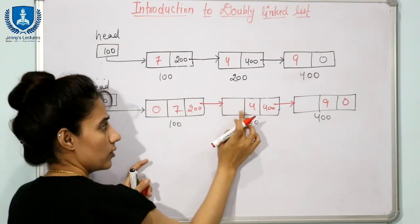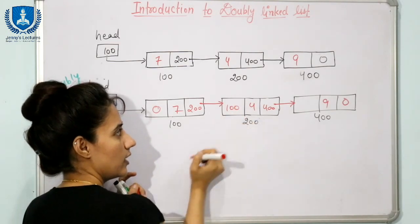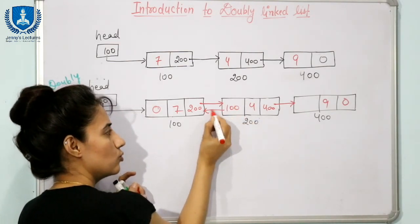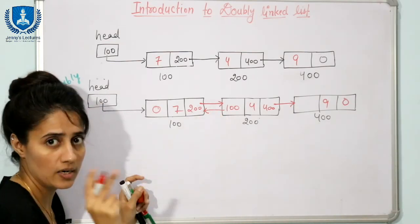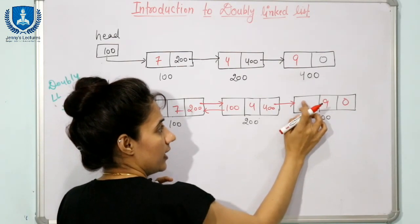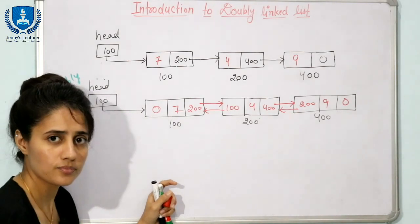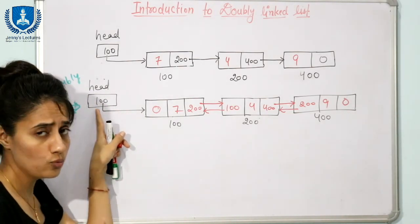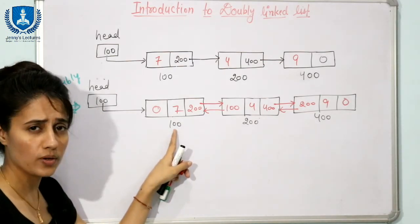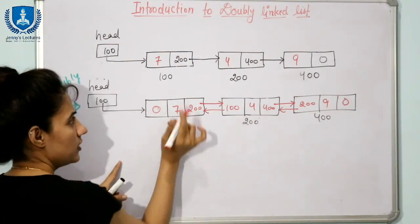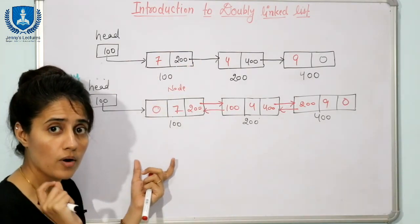In this address part, we store the address of the previous node. For the first node, the previous pointer is null since there is no previous node. For the second node, this part stores 100 — pointing back to the first node. For the third node, it stores 200, pointing back. So two links exist — double links — and we maintain a head pointer containing the address of the first node.